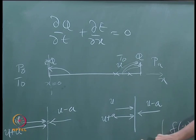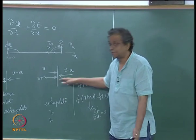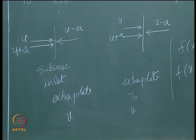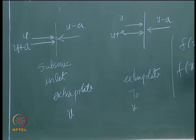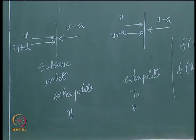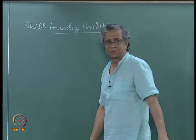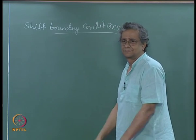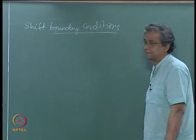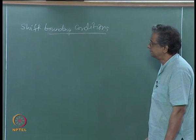If the exit were a supersonic exit, all three characteristics propagate outward. I would just use first-order extrapolation. These are called shift boundary conditions. It is supersonic, everything is flowing out, nothing is coming back — so there is no point putting in the effort to do second order.